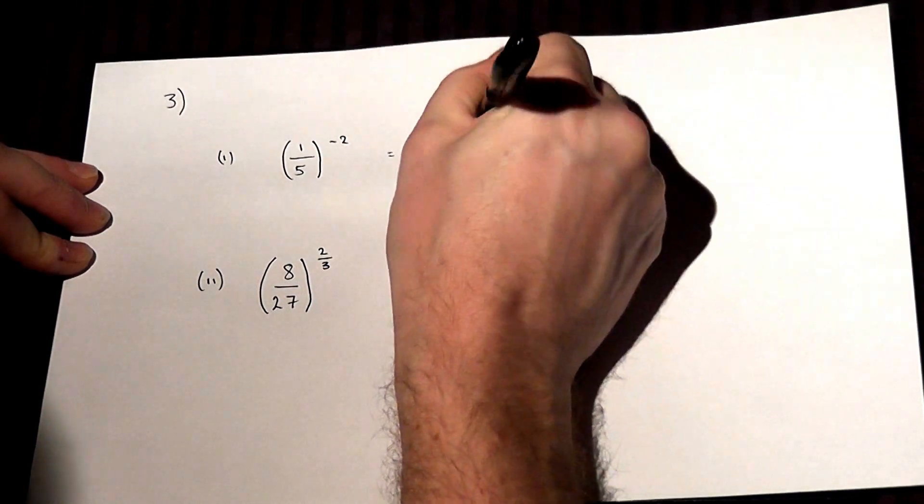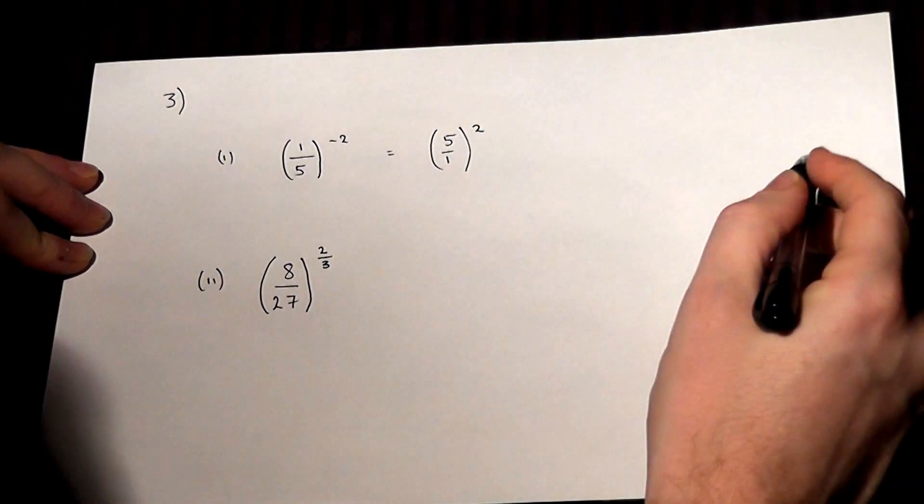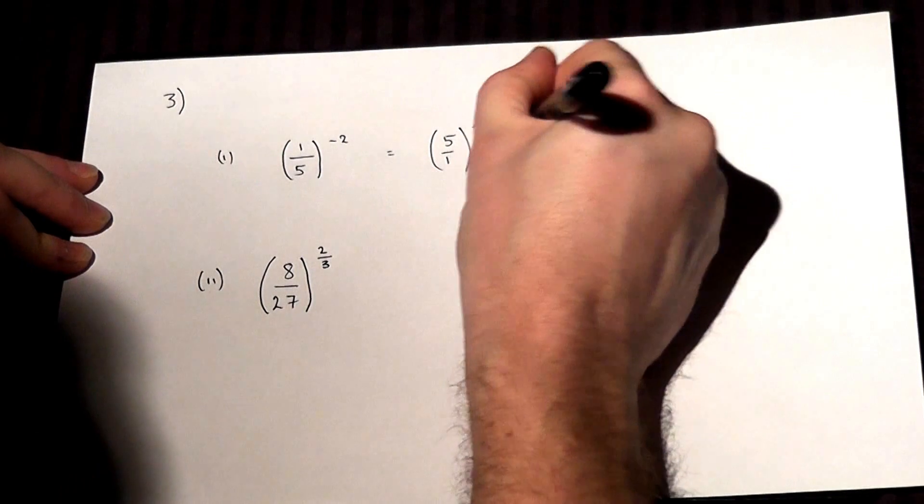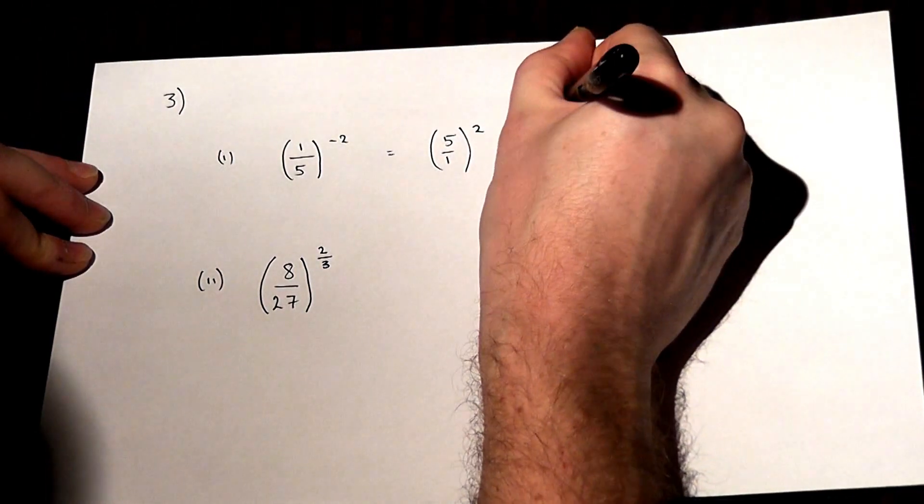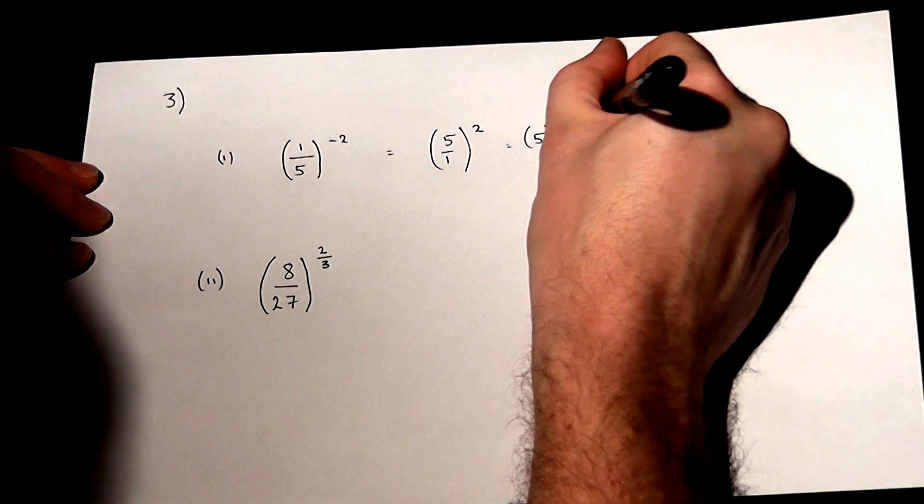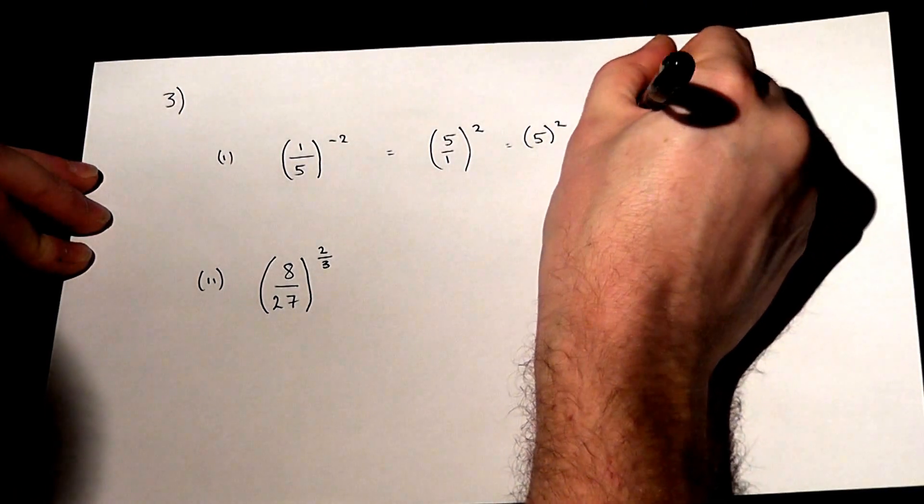over 1 to the power of 2. Now 5 over 1 just equals 5, so it's 5 squared, which equals 25.